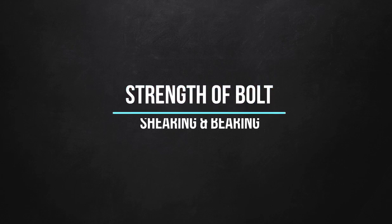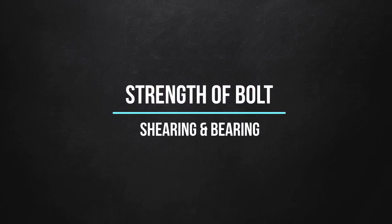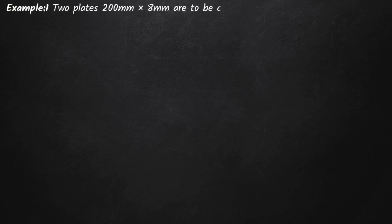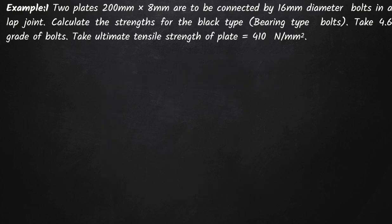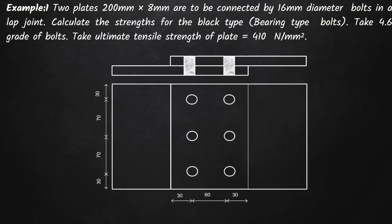Welcome everyone. In this video we are going to solve a simple numerical on the strength of the bolt in shearing and bearing. Two plates 200mm by 8mm are to be connected by 16mm diameter bolts in a lap joint. Calculate the strength for the black type bolts. Take the grade of the bolt as 4.6 and ultimate strength of the plate as 410 N/mm². A diagram is also given showcasing two plates attached with six bolts in the lap joint.